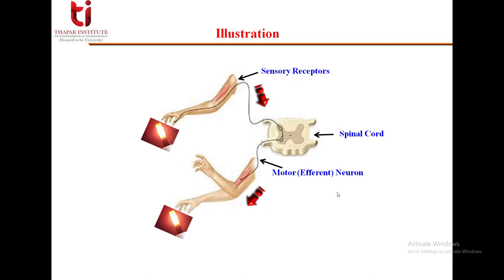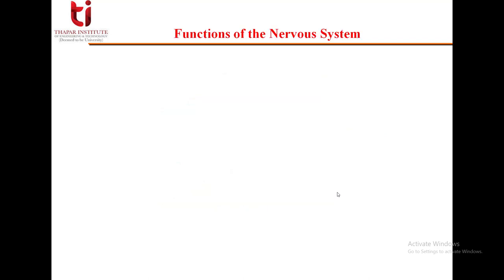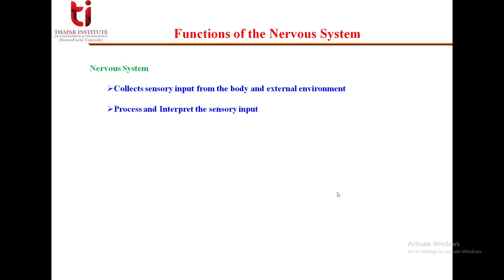By this example, we can define the main functions of the nervous system. The nervous system collects sensory input from the body and the external environment, then it processes and interprets the collected input, and finally it responds appropriately to that corresponding input.